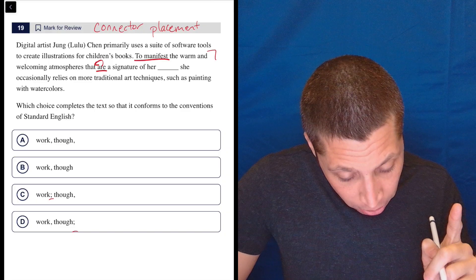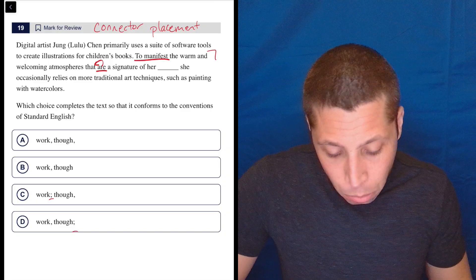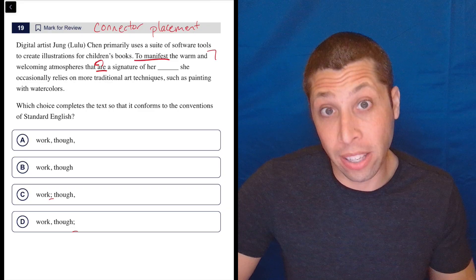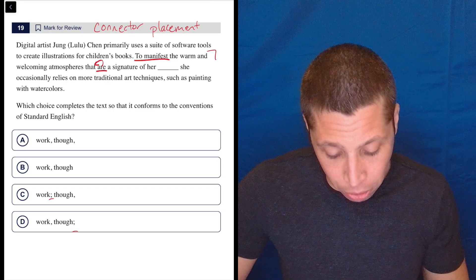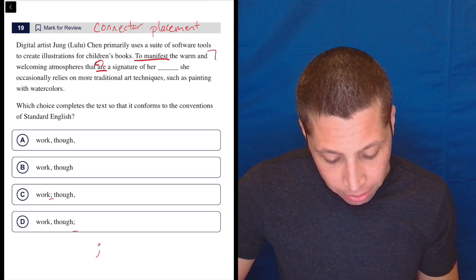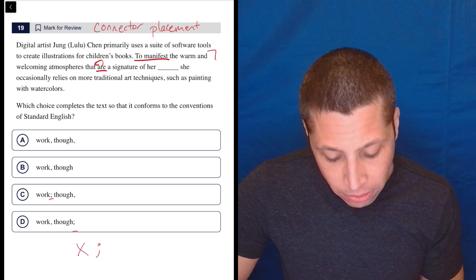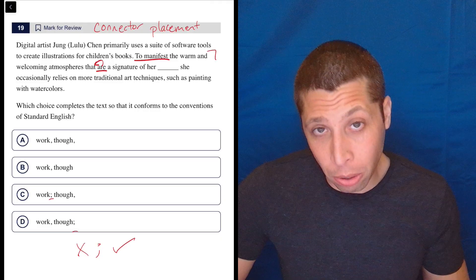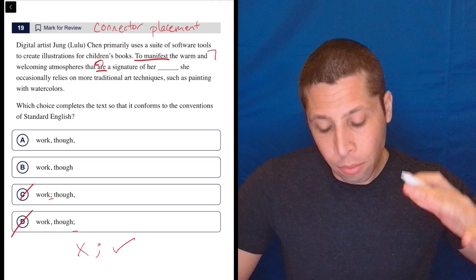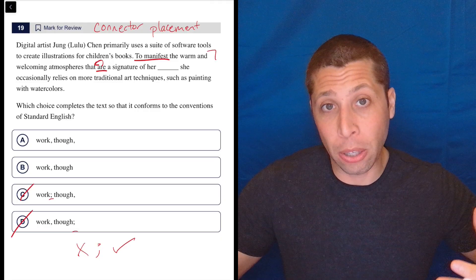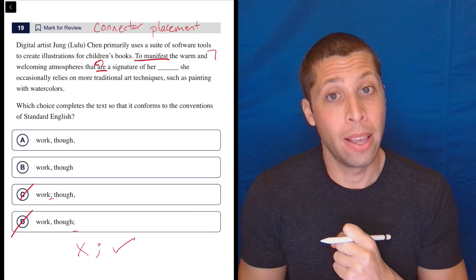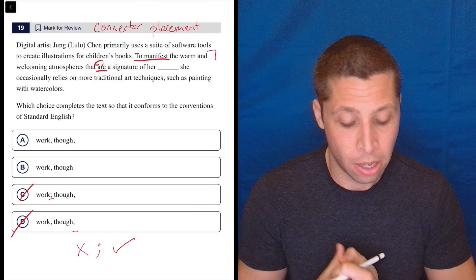Now the part after is right. 'She occasionally relies on more traditional art techniques'—that's a sentence. 'Such as painting with watercolors'—that's an extra clause. So we do have a sentence after. So if I'm trying to take care of that semicolon, I don't have a sentence before, I do have a sentence after, but what that means is we can't use a semicolon here. The only reason we would use a semicolon here is to join two complete sentences. If we don't have one of them, then that's not a good use of a semicolon. So that's gone.